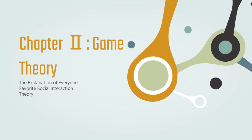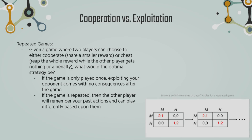Chapter 2: Game Theory, or the explanation of everyone's favorite social interaction theory. Given a game where two players can choose to either cooperate, where they share a small reward, or cheat, where they reap the entire reward while the other player gets nothing or a penalty, we can ask what the optimal strategy would be.